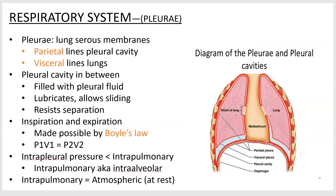Moving on to the pleurae — a pleura is a membrane associated with the lungs. The serous membranes of the lungs are called the pleurae. You have the parietal pleura, which lines the inside of the body wall — the diaphragm and the inside of the ribs. The visceral pleura is the lining that covers the actual lungs themselves. There is a pleural cavity in between the visceral and parietal pleura filled with pleural fluid, which allows the lungs and the parietal pleura to slide along each other so they don't stick.